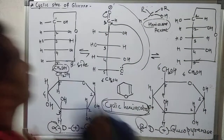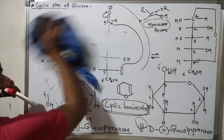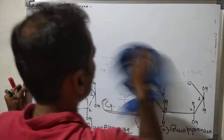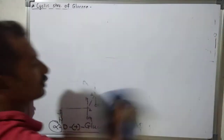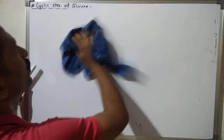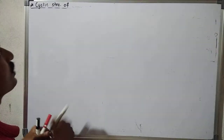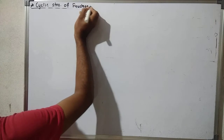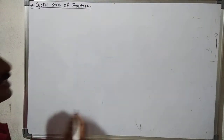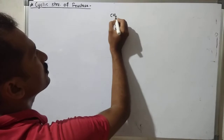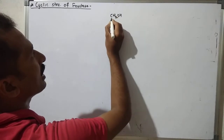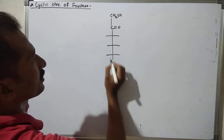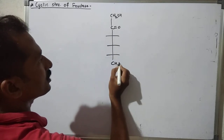Now let's look at the cyclic structure of fructose. The open chain structure of fructose has a keto group instead of an aldehyde. The fructose cyclic structure has CH2OH at the upper side, then C=O, followed by CH2OH with carbons 1 through 6 — it also has 6 carbon atoms with the formula C6H12O6.